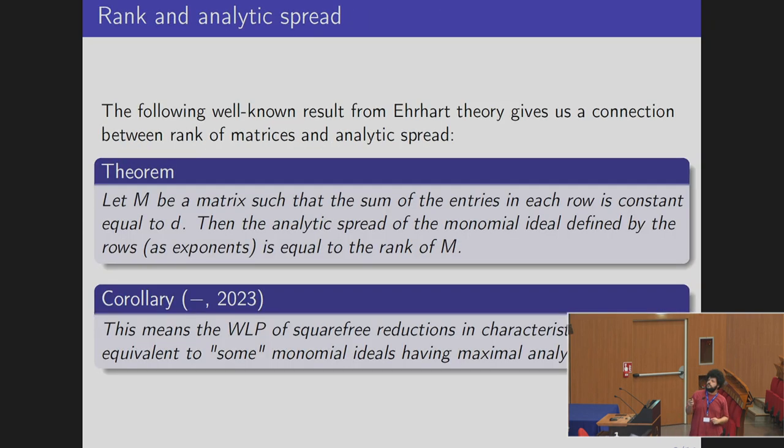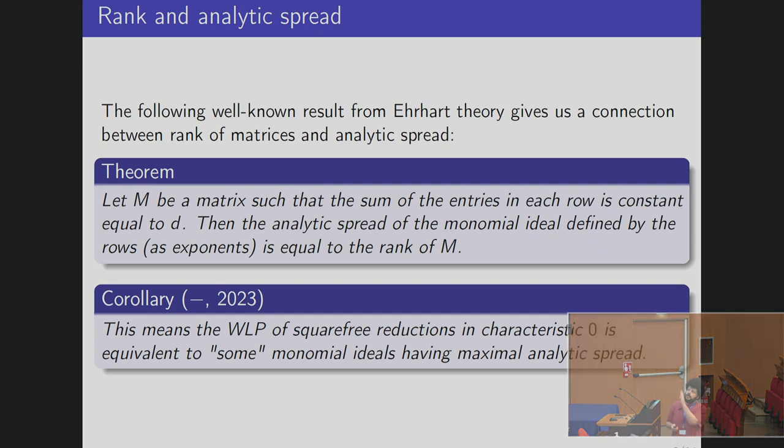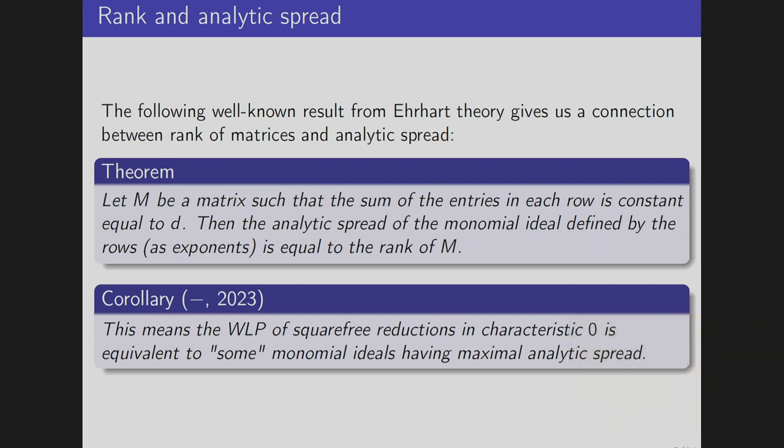As a corollary we get right away that when you take a square-free reduction — a square-free monomial ideal plus the squares of the variables in a polynomial ring — in characteristic zero, having the WLP is equivalent to certain monomial ideals having maximum analytic spread.